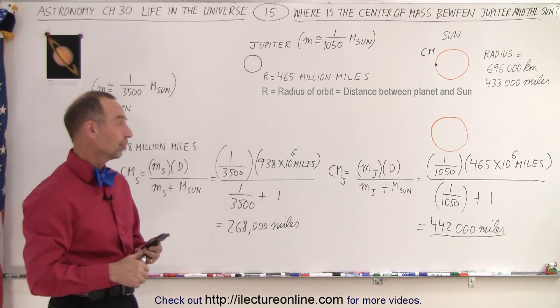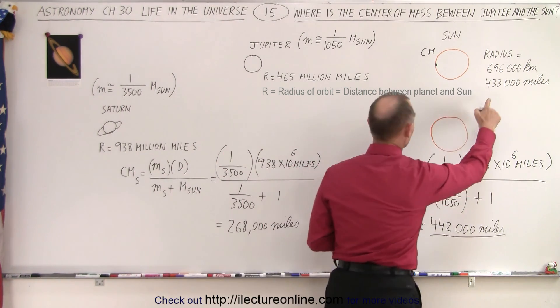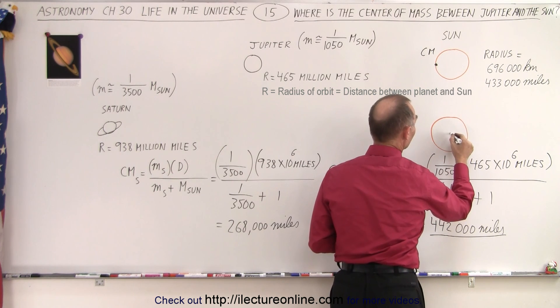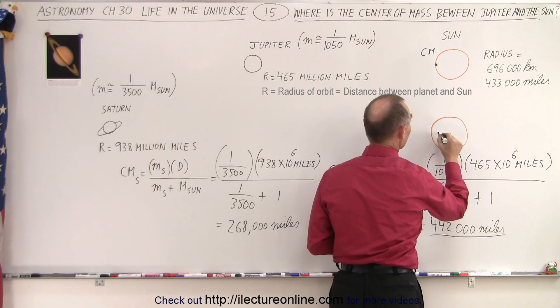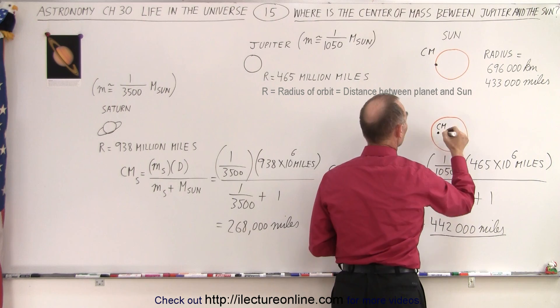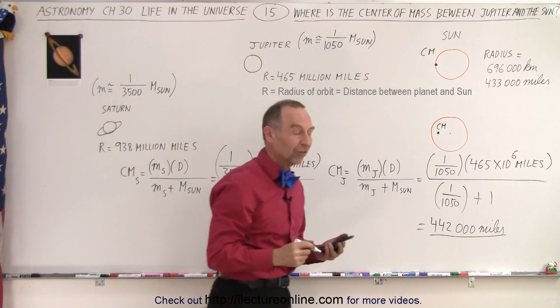Okay, so where would that put the center mass? Well, that's a little bit over half, so if this is the center of the Sun, so the center mass would be about there, between Saturn and the Sun.